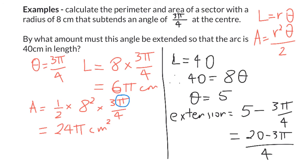That's not going to be a particularly nice value. If I put in my calculator, I end up with 2.64 radians, which is a little bit more than 150 degrees, but our exact value here is better. So, my angle needs to increase by 20 minus 3π over 4 so that I get an arc length of 40 centimeters.